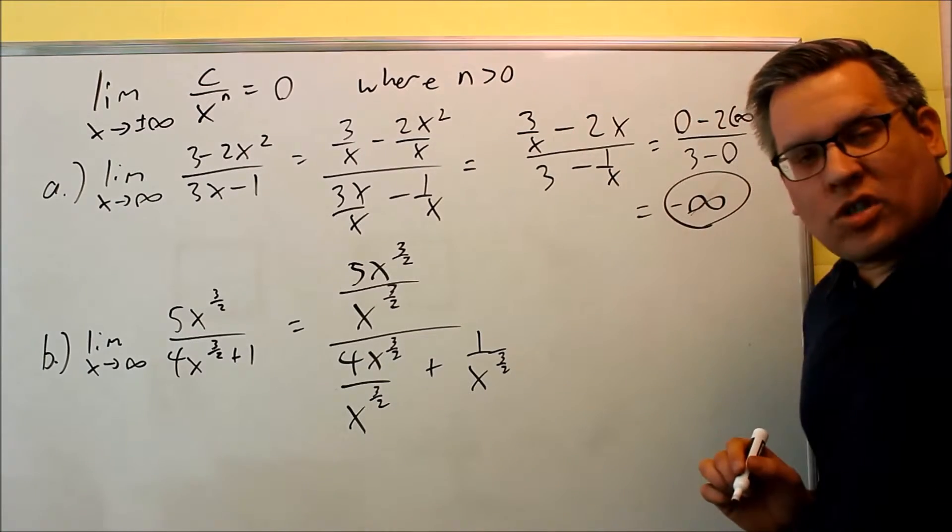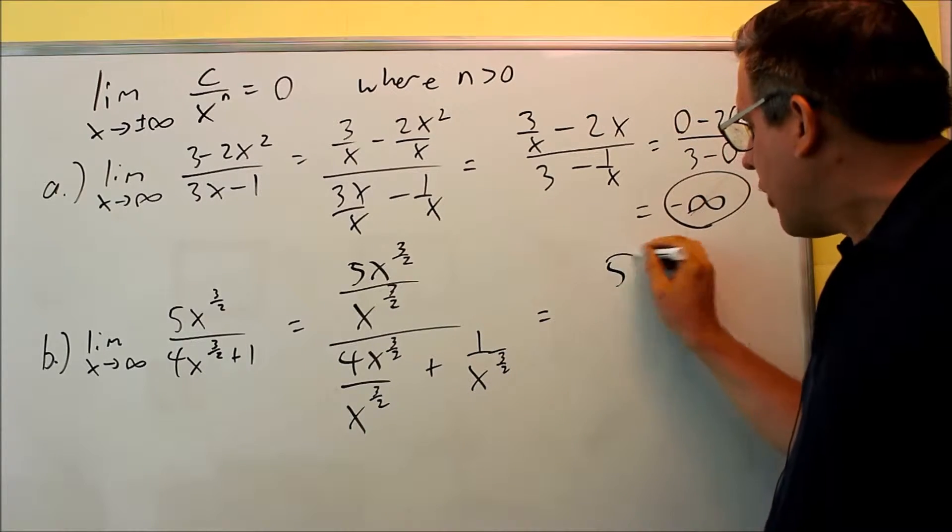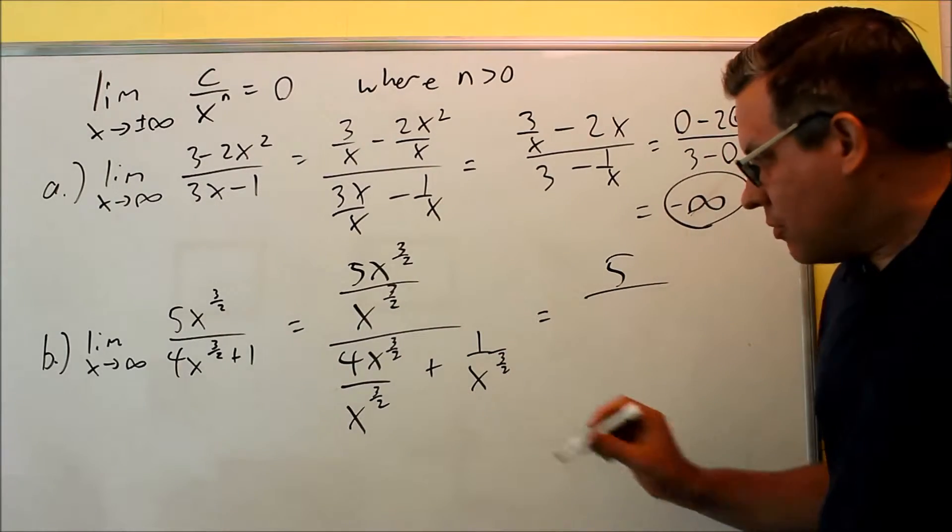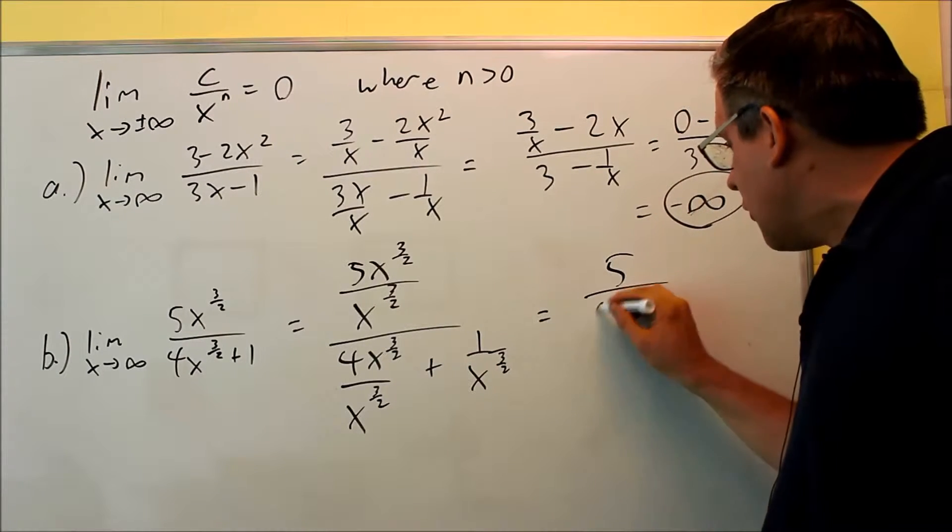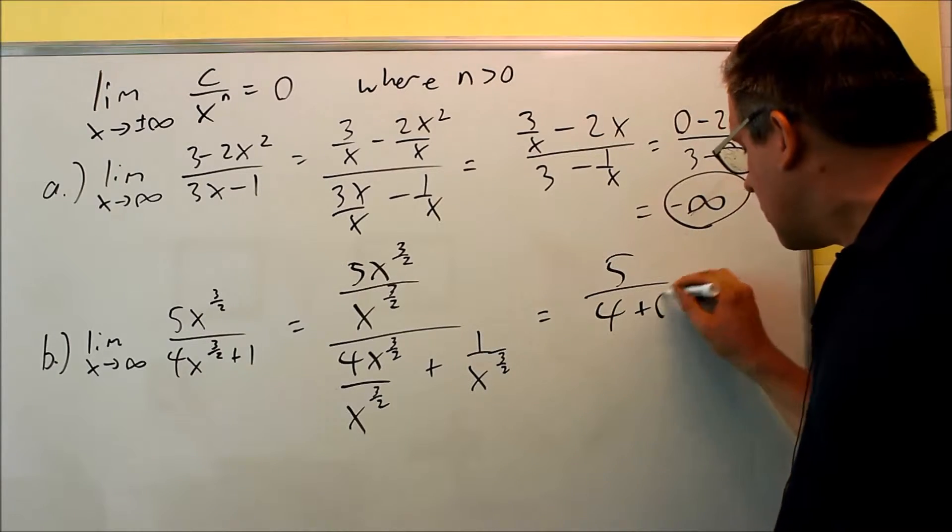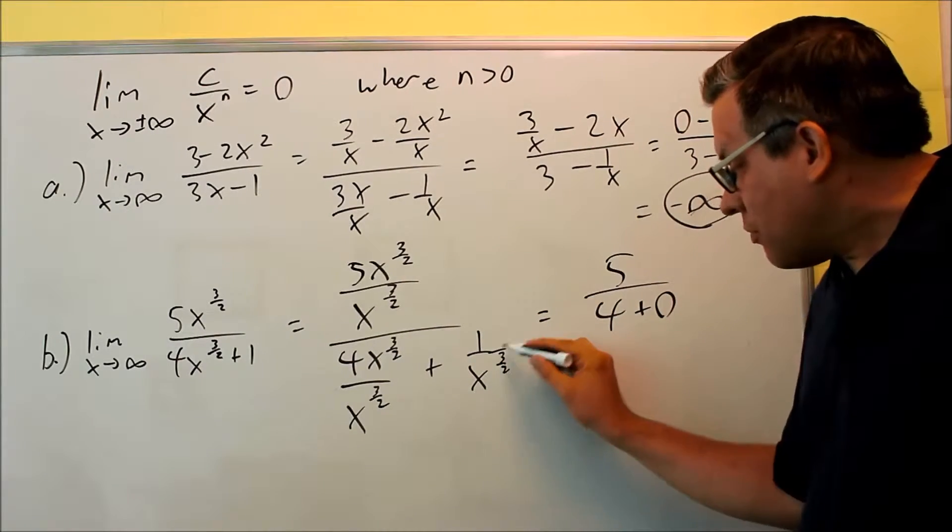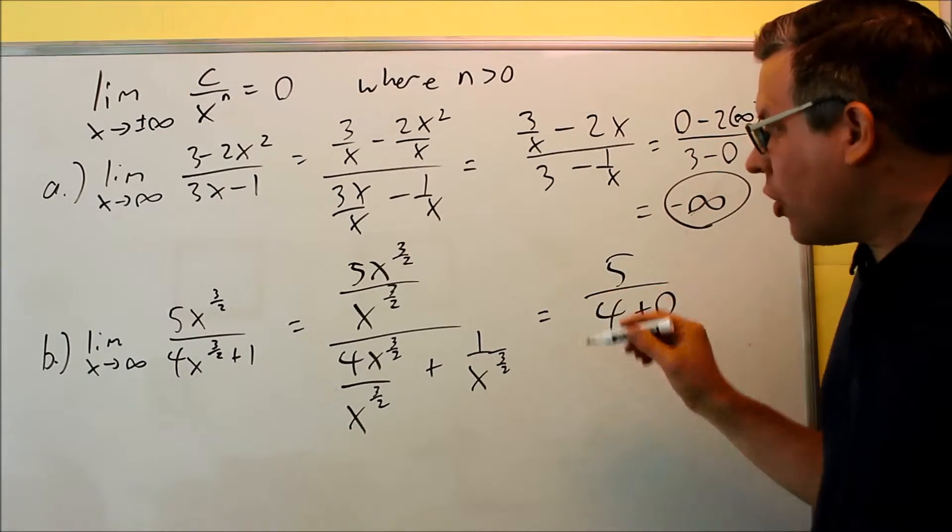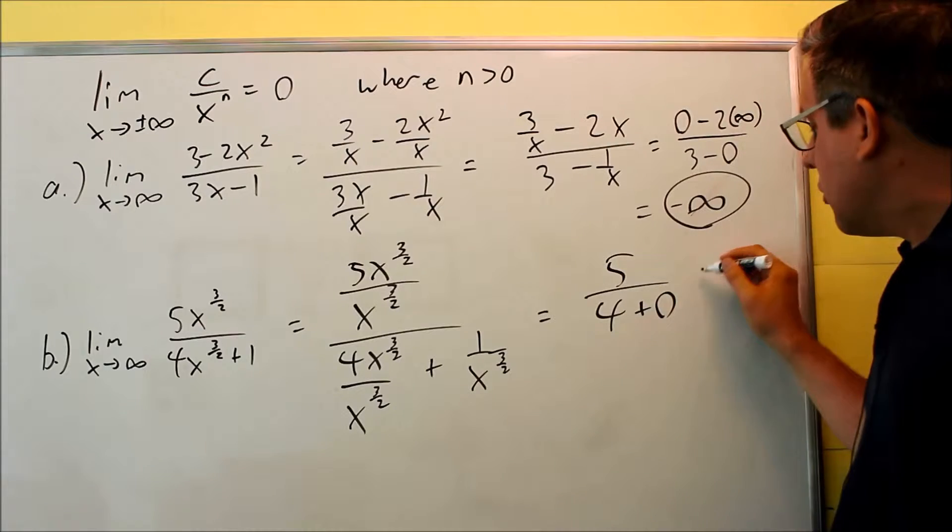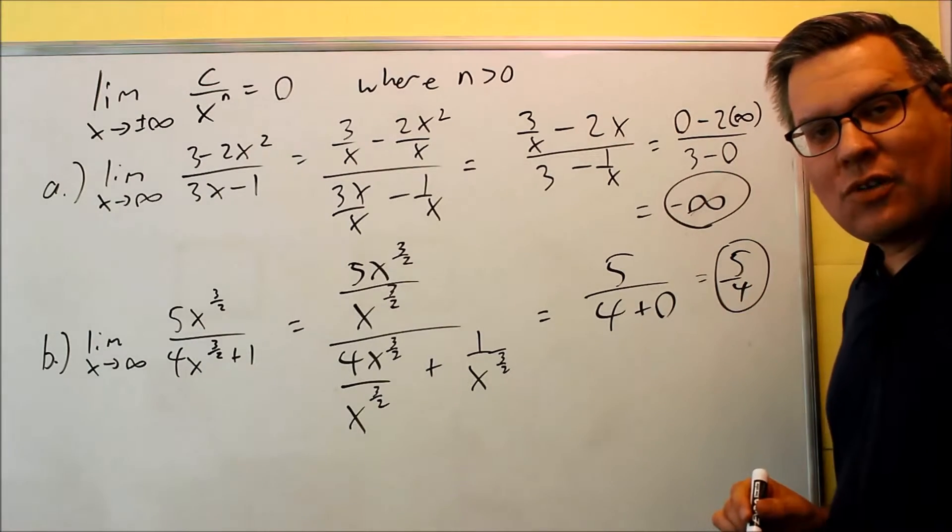All right, simplifying it, those are both going to cancel out, and you get a 5. On the bottom, those are both going to cancel out also, and you just get a 4, and then plus this part is going to go to zero. Again, you have x to a power, as long as that power is greater than zero, which it is, we know that that's going to go to zero. So the final answer for part b is going to be 5 fourths.